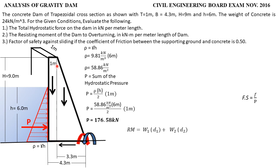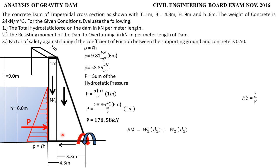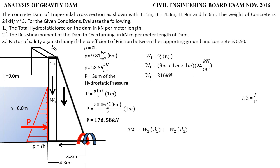For weight 1 — the rectangular part — the volume of concrete is 9 meters times 1 meter times 1 meter strip, multiplied by the unit weight of concrete 24 kN/m³. Weight 1 equals 9 × 1 × 1 × 24, which gives weight 1 equal to 216 kilonewtons.